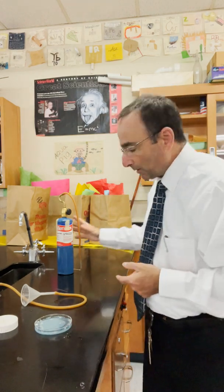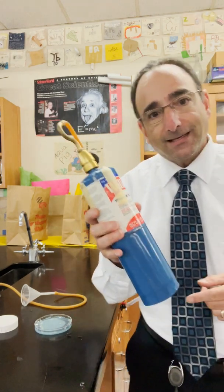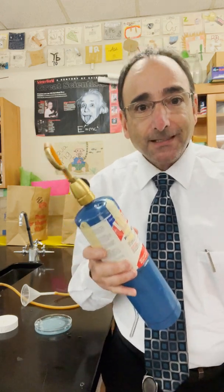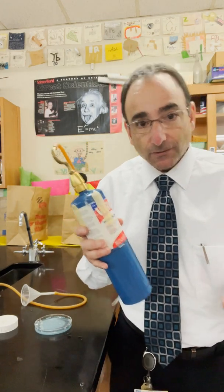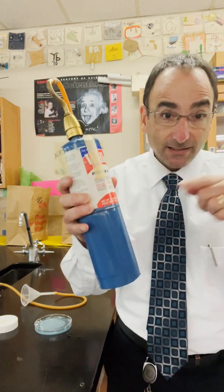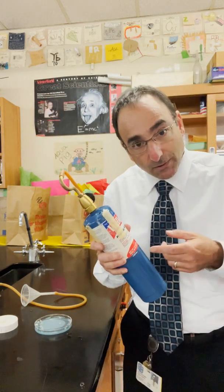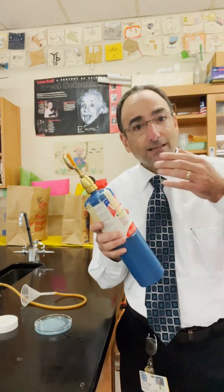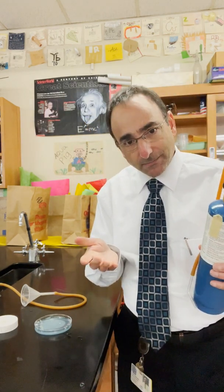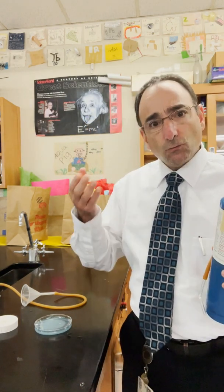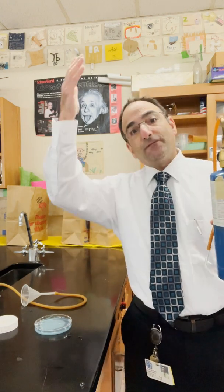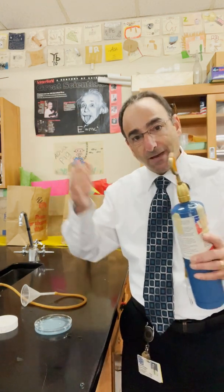Then we blow some bubbles with propane. The kids will see that the propane bubbles sink, and they sink a little bit faster than they did with air, so they write down propane sinks fast. We do the same with carbon dioxide — carbon dioxide sinks fast. If I happen to have a helium tank that year, we'll blow some bubbles with helium. Helium floats fast — it floats faster than methane. And we start talking about why that happens.